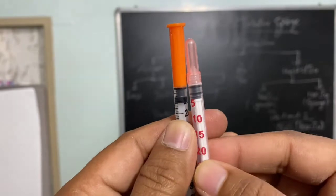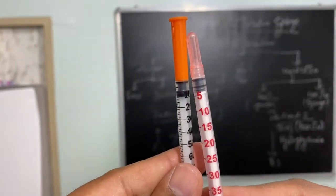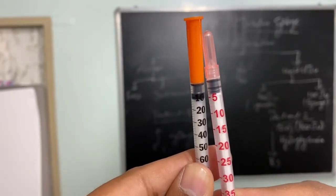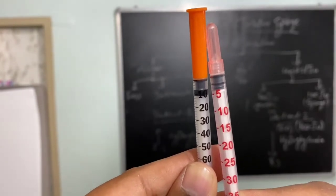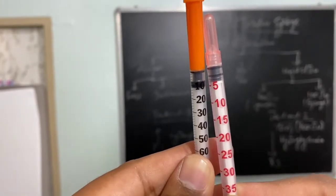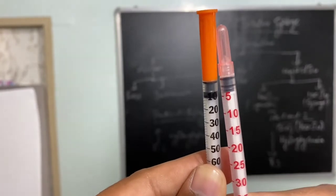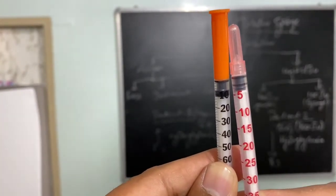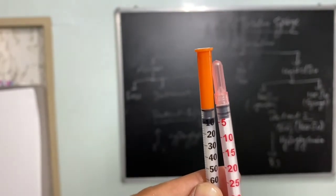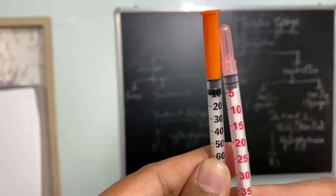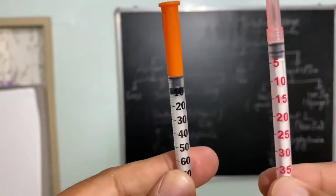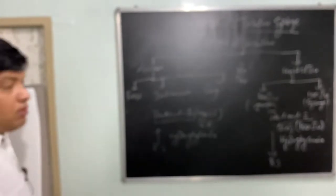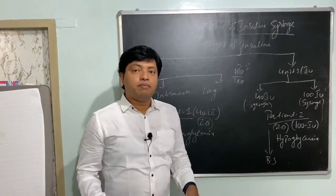If we keep the two syringes side by side — 20 units marked on the left (40-unit syringe) and 20 units marked on the right (100-unit syringe) — you can see the difference. In the 100-unit syringe, 20 units is only a small amount. In the 40-unit syringe, 20 units is much more volume. So there is a clear difference in the volume drawn for the same unit marking.